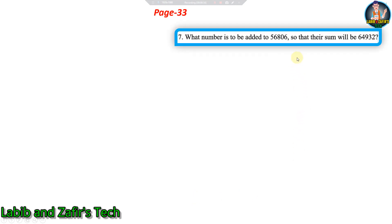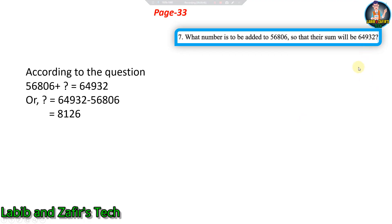Next: What number must be added to fifty-six thousand eight hundred six so that their sum is sixty-four thousand nine hundred thirty-two? This is an equation-type word problem, though it is rarely found in the exam. We set up: 56,806 plus unknown = 64,932. Taking the known number to the right side (plus becomes minus): 64,932 minus 56,806 = 8,126. The unknown number is eight thousand one hundred twenty-six.